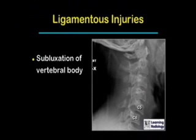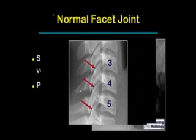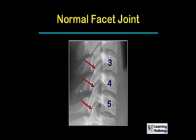There may be subluxation of the vertebral body and there may be perched or locked facets. Let's take a moment to talk about normal facet anatomy.